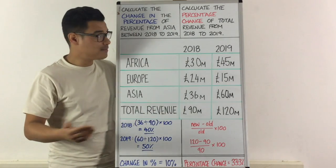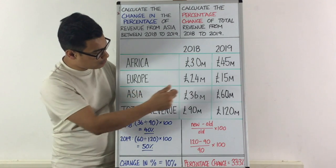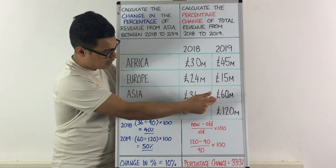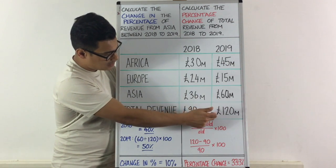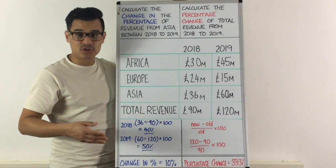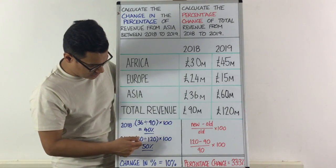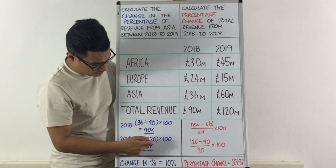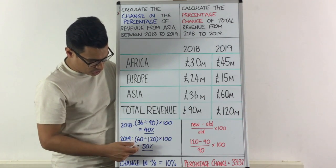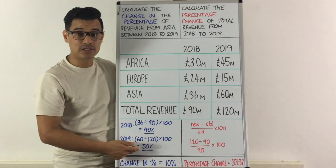Then you do the same thing for 2019. In 2019, it seems that much more sales are coming from Asia — 60 million. And as a whole, it is a total revenue of 120 million. So we know that's 50%, but we can just quickly show the method for calculating that: 60 divided by 120 times by 100 to make it a percentage. So in 2019, 50% of the revenues were coming from Asia.